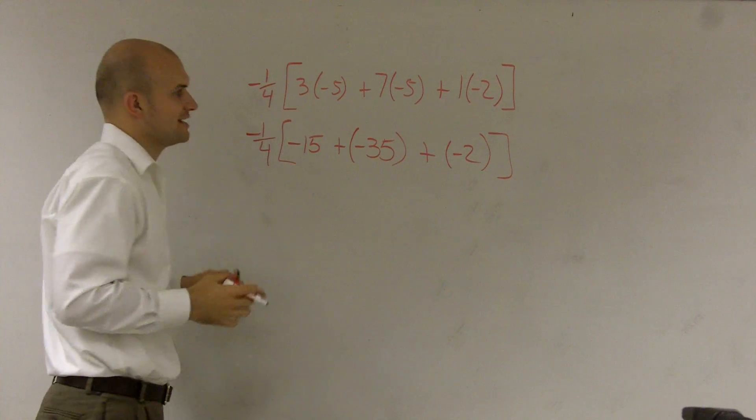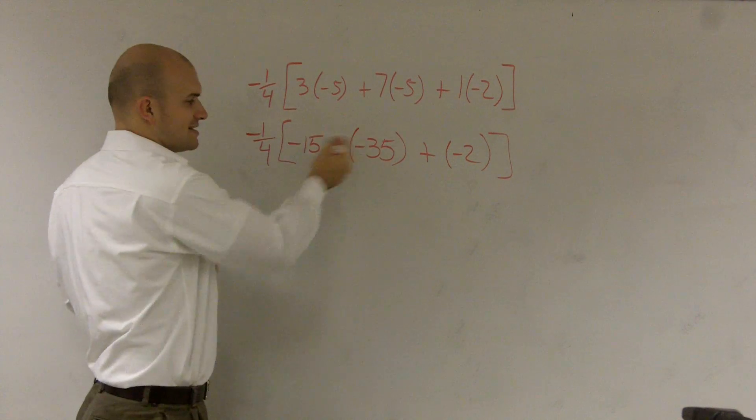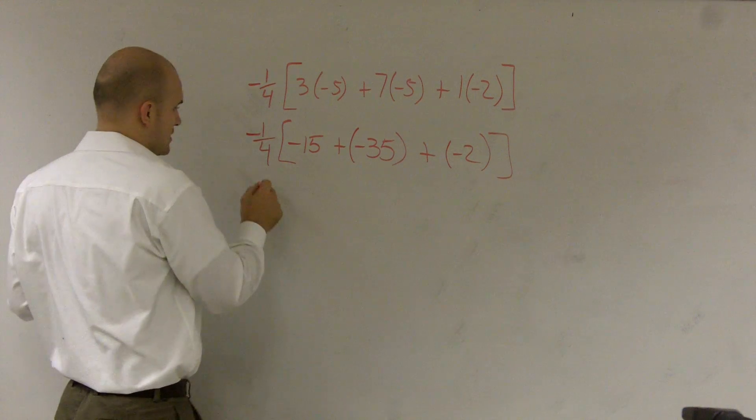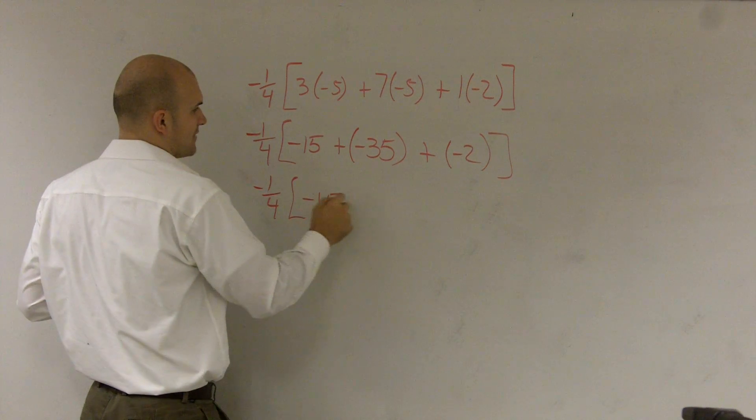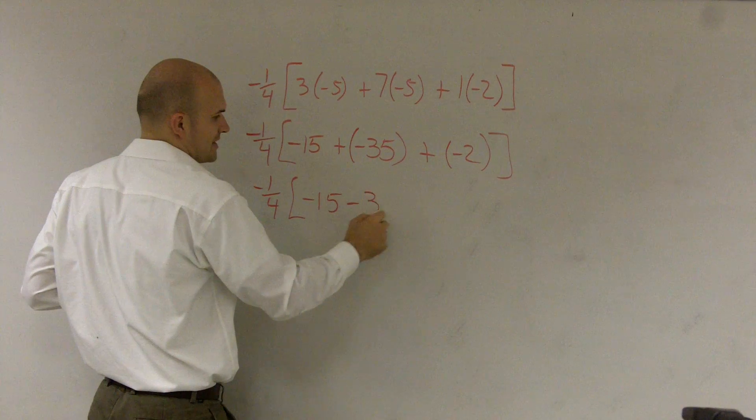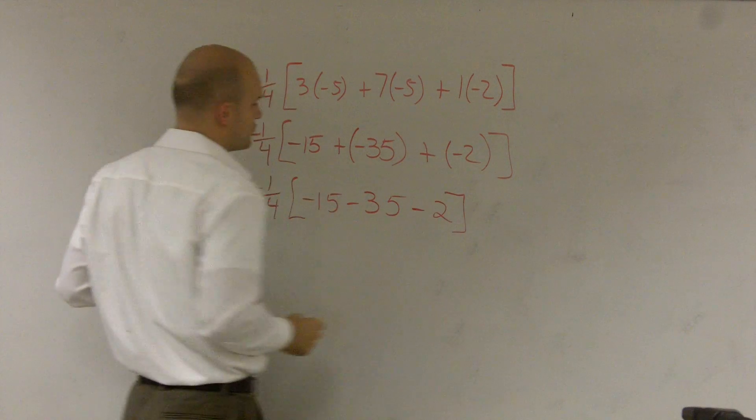I kept these in parentheses so you can see it gives me a negative number, but it's still a plus. Plus a negative is the same as subtracting. Let's rewrite this: -15 - 35 - 2. Just a different way to write it.